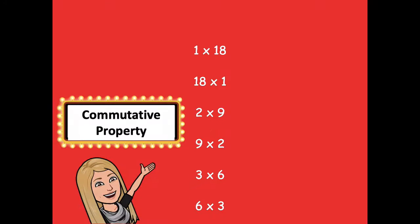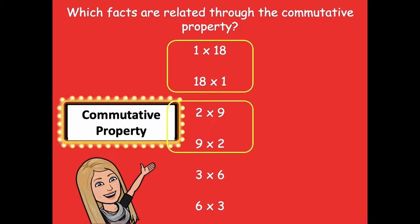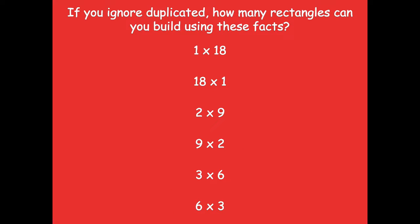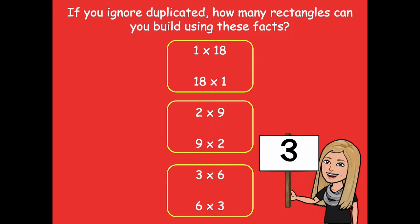Thanks to the commutative property, some facts are related: 1 times 18 is the same as 18 times 1; 2 times 9 and 9 times 2 are the same — we just flip-flop the factors and get the same product; and 3 times 6 and 6 times 3 go together. So ignoring duplicates, there are really just three unique rectangles — the others are just rotated versions.